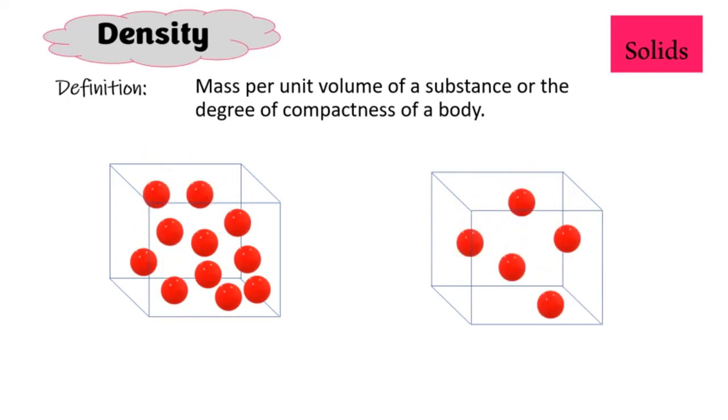Just by looking at both, we can see that there is a difference in the number of particles in each box. Therefore, one of these boxes would be more dense than the other, simply because it is more compact. It has more particles within the same space.